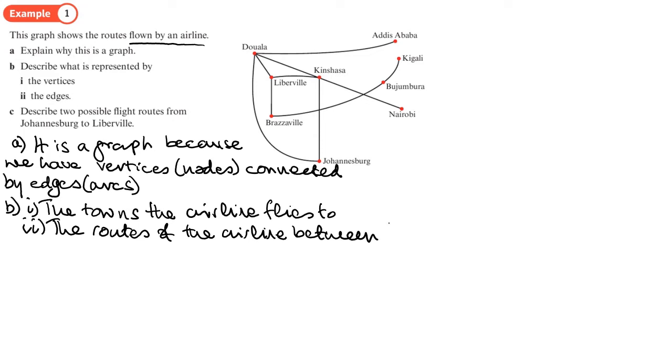Let's have a look at part C. Part C is to describe two possible flight routes from Johannesburg to Liberville. Let's highlight those two towns. So we have Johannesburg down here, so we want to get from Johannesburg to this town here. Now, presuming that I can go either way, these are two-way flights. So I could go Johannesburg to Douala to Liberville. Or I could go up to Kinshasa, and then Liberville that way.